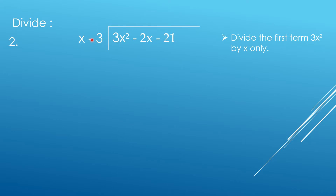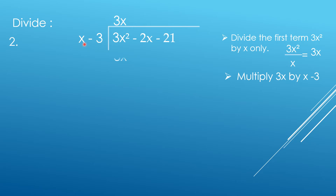So how are we going to divide this? First, divide the first term, which is 3X squared, by X only. So 3X squared divided by X — 3 divided by 1 is 3, then X, copy the base, and 2 minus 1 is 1, so that is 3X. Then multiply 3X by the whole divisor: 3X times X is 3X squared, and 3X times negative 3 is negative 9X.